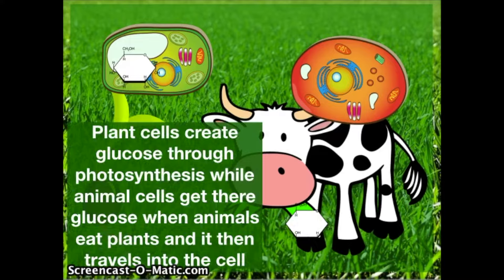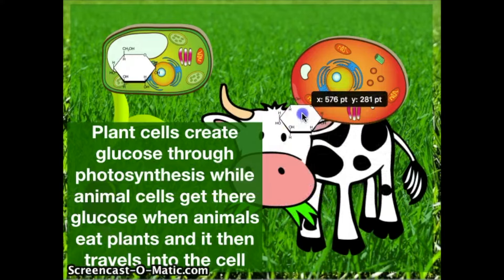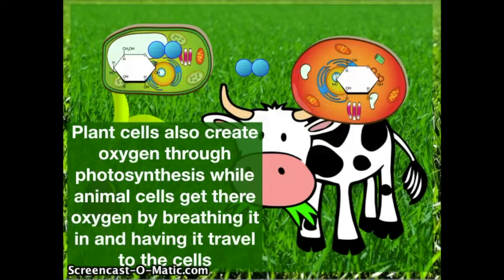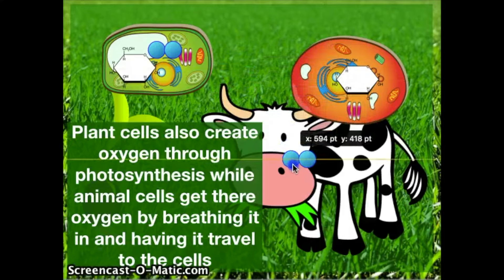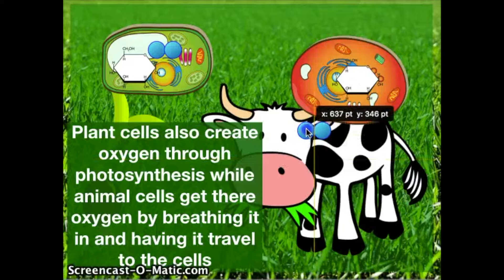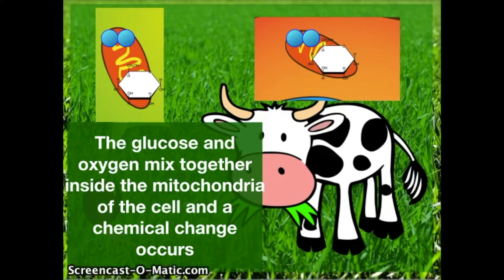Plant cells create glucose through photosynthesis, while animal cells get their glucose when animals eat plants and then it travels into the cell. Plant cells also create oxygen through photosynthesis, while animal cells get their oxygen by breathing it in and having it travel to the cells.